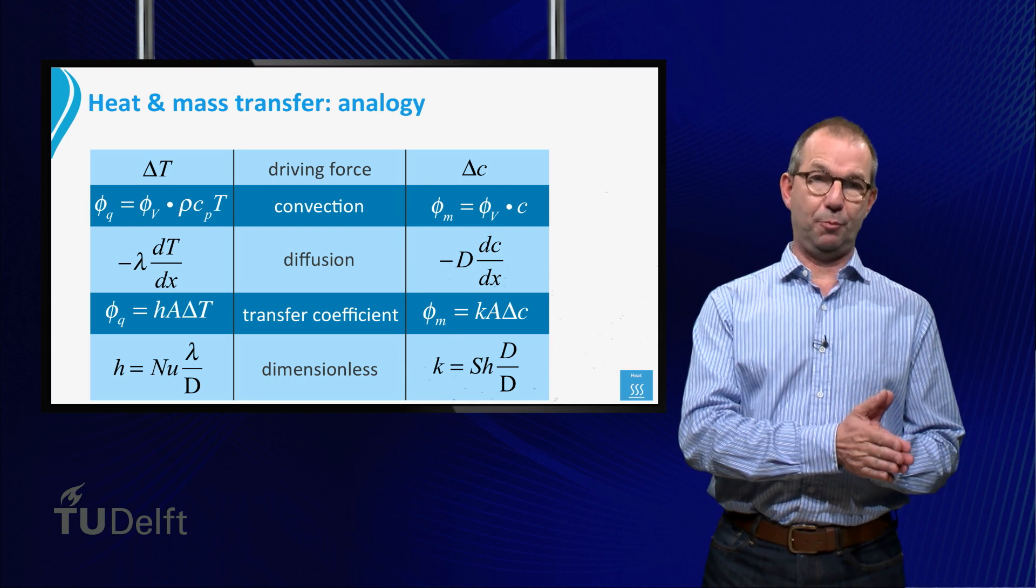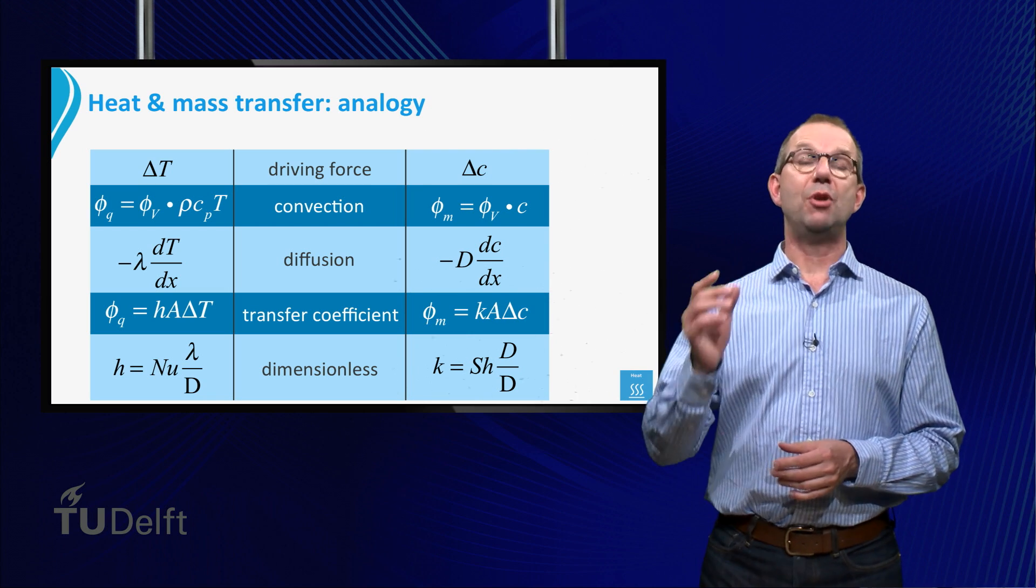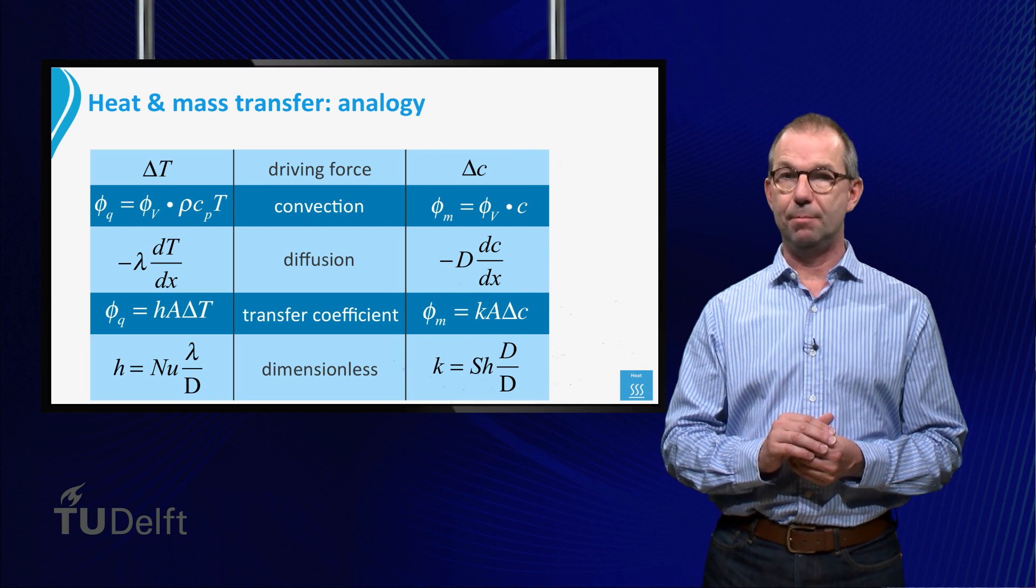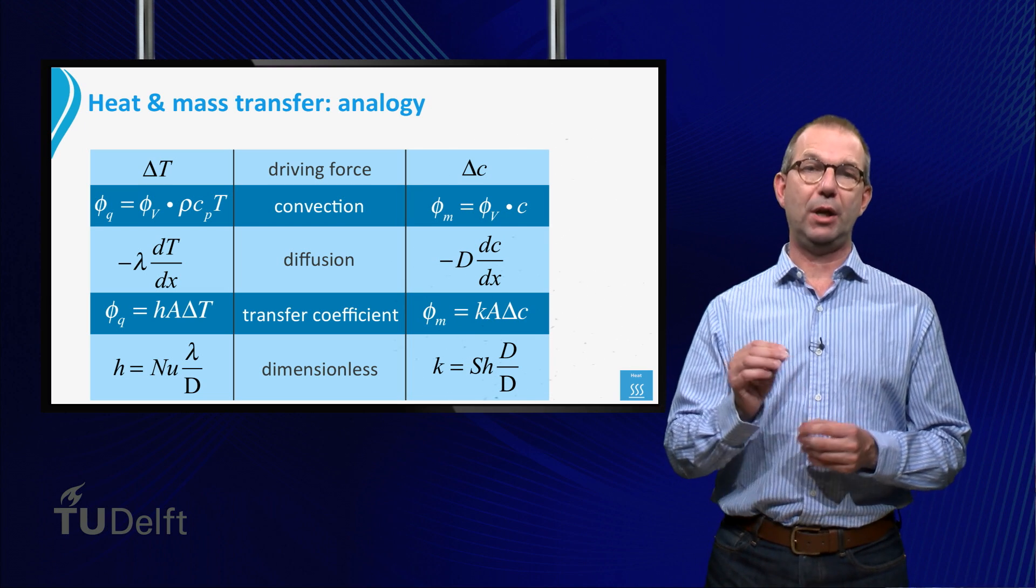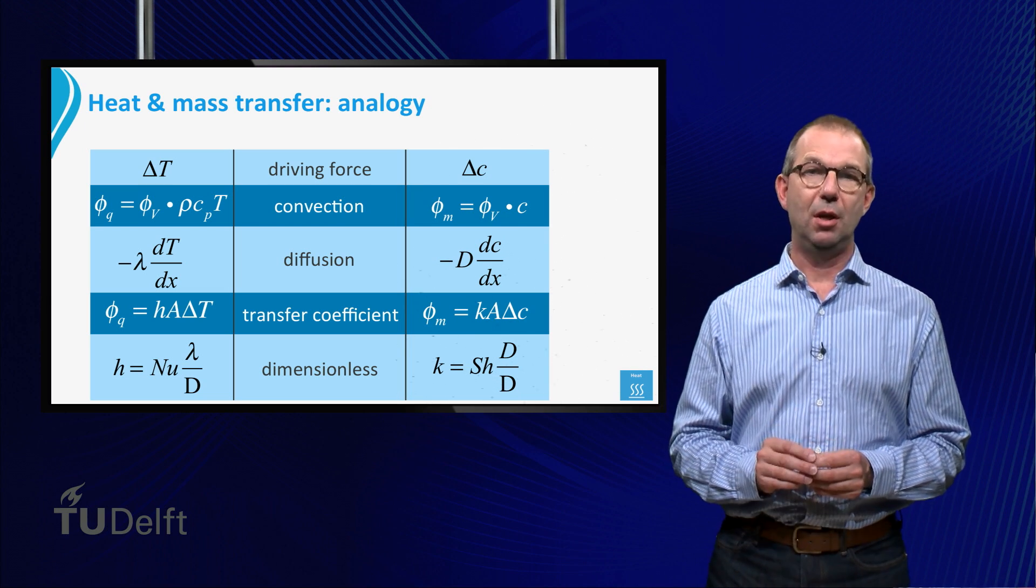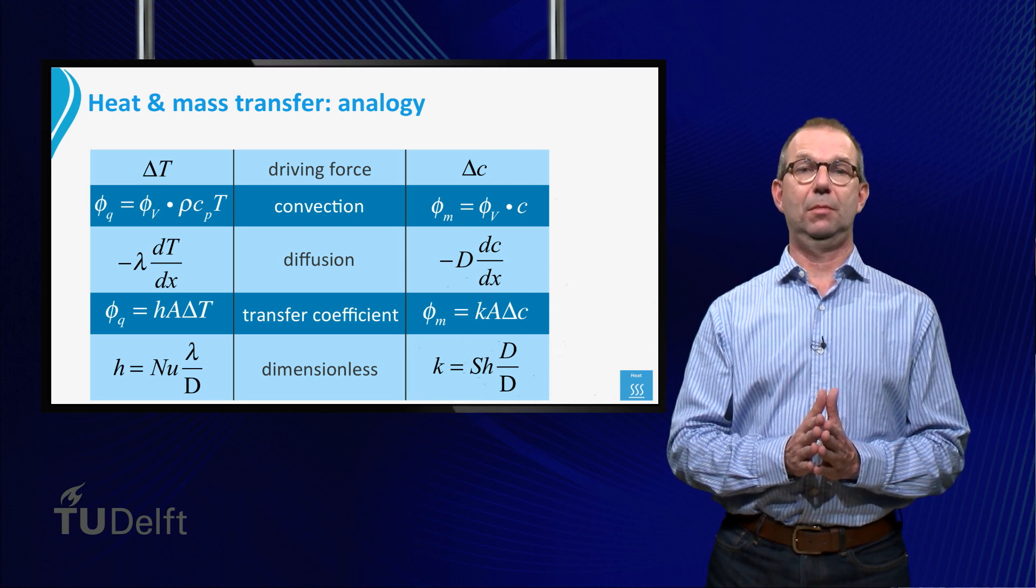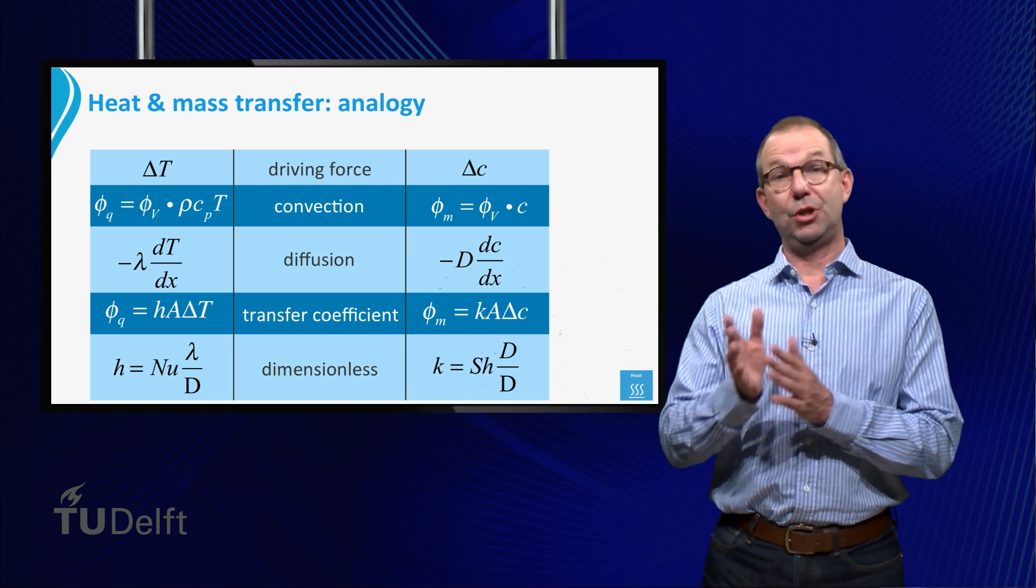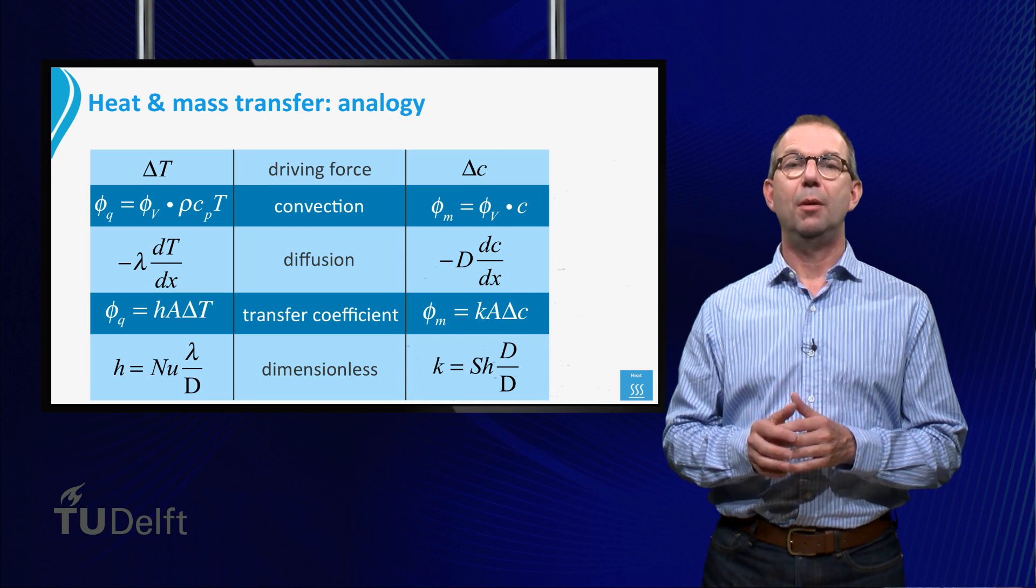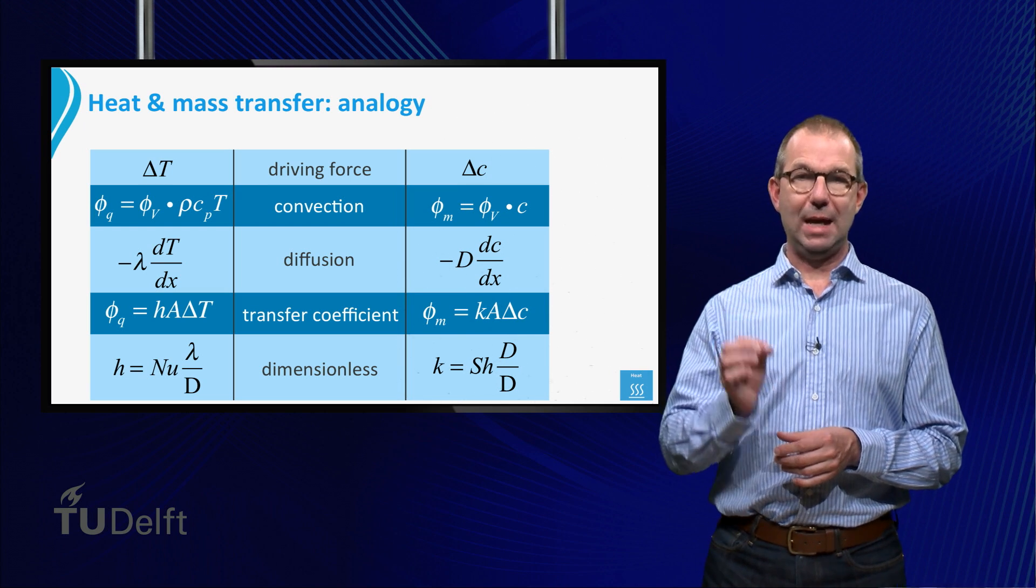The mass flow is proportional to the driving force times the area times a mass transfer coefficient k. We can make this dimensionless by using for k as a first estimate the result for steady state diffusion through a layer that is stagnant. The difference between the true k and this first estimate is given by the Sherwood number, abbreviating as Sh.